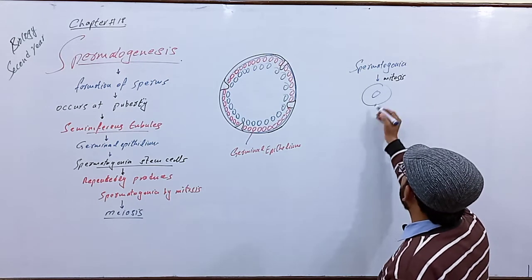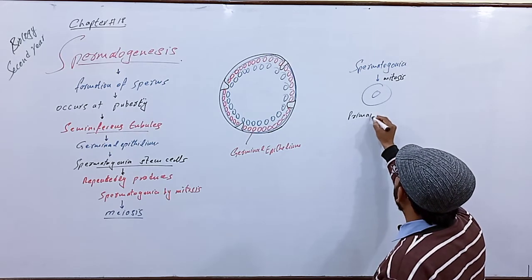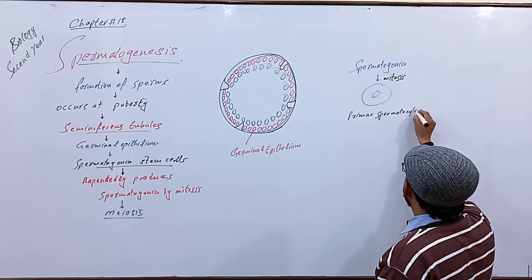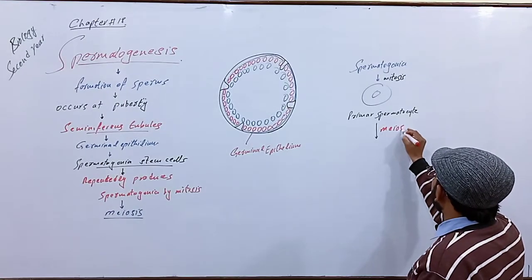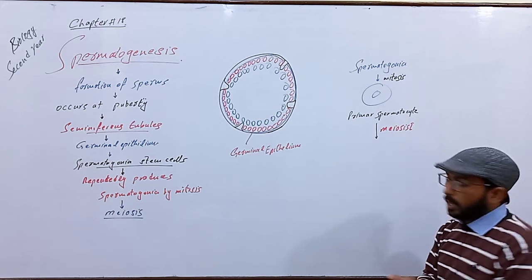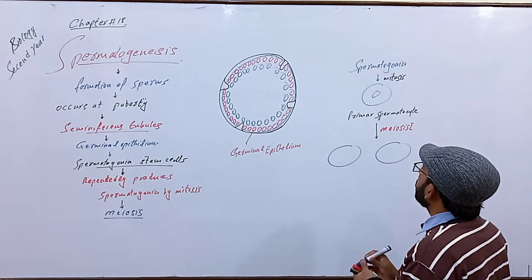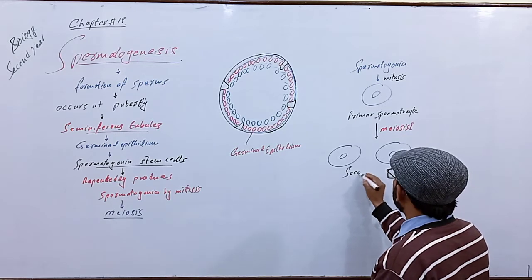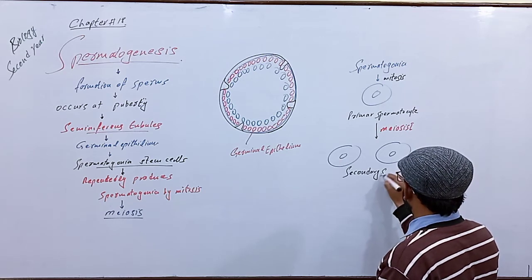Spermatogonia then become primary spermatocytes. Meiosis first stage completes, and this produces two daughter cells. These daughter cells are called secondary spermatocytes.